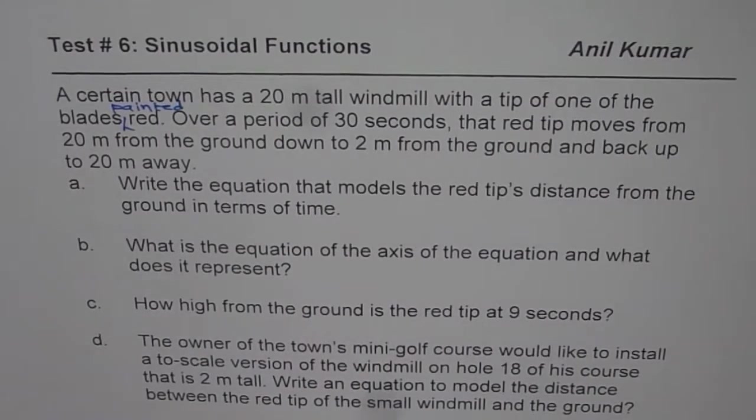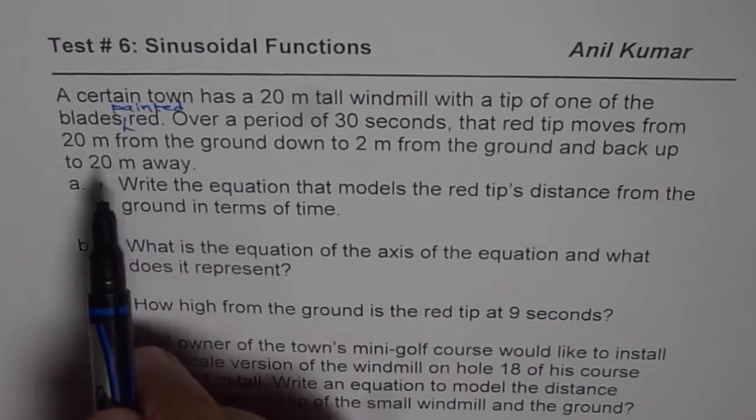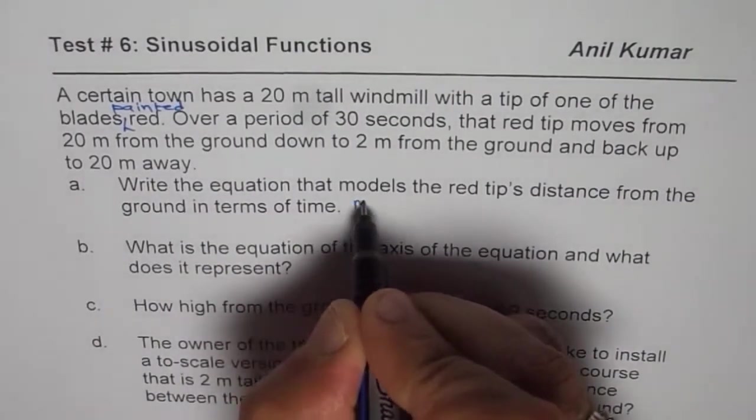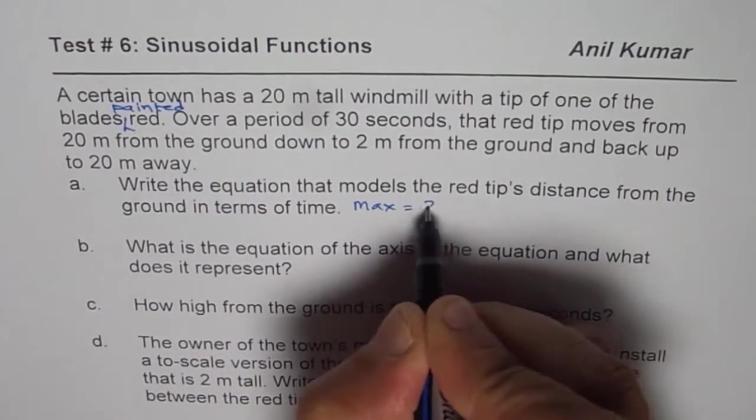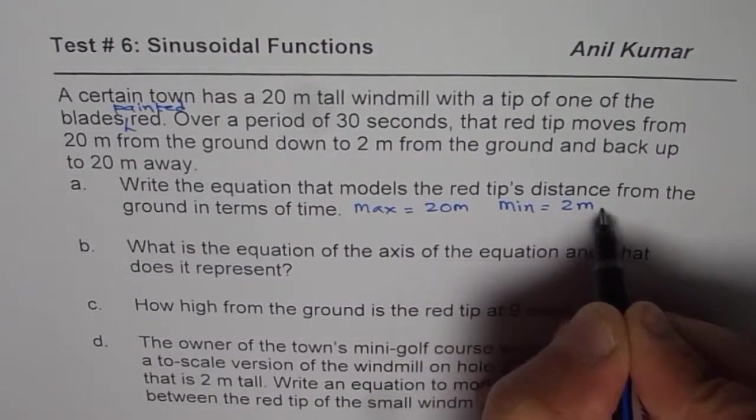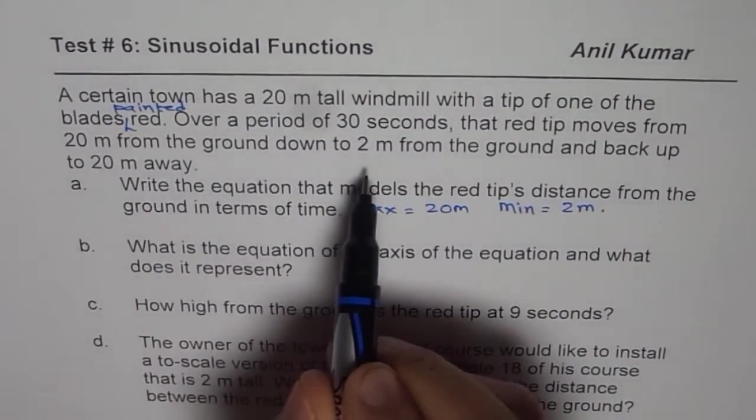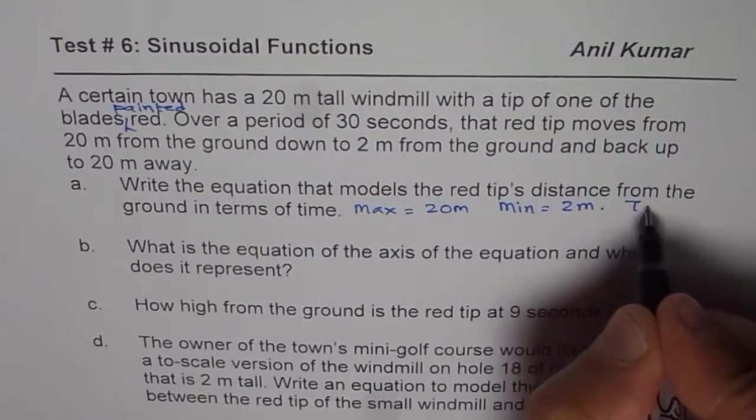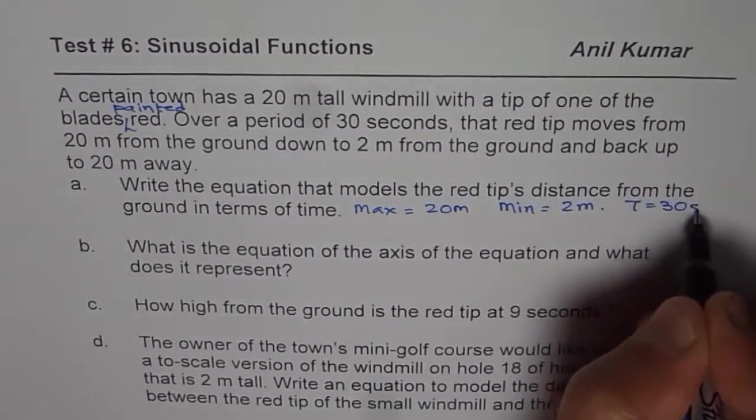Okay, so what we are given here is that maximum height is 20 meters of the red tip. So let me write down here, maximum is equals to 20 meters, minimum is equals to 2 meters. And the time taken for one revolution is 30 seconds. So T is equals to 30 seconds.